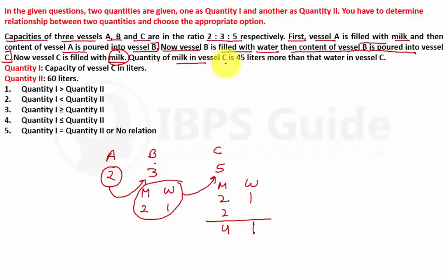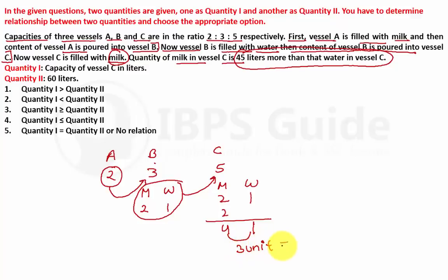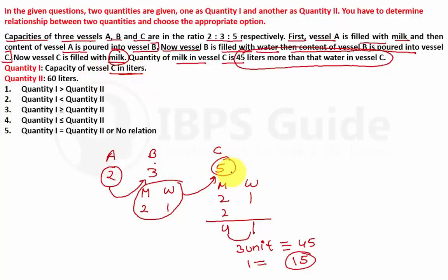The quantity of milk in C is 45 liters more than the quantity of water in C. The difference is 3 parts (4−1), and this 3 units = 45 liters, so 1 unit = 15 liters. The capacity of vessel C is 5 units, so 5 × 15 = 75 liters.